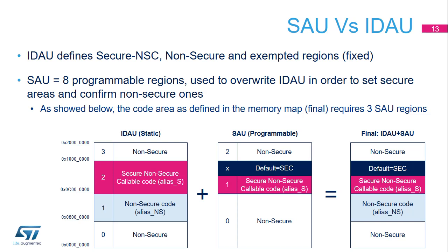For example, when an unmapped secure SAU region overlaps with a secure non-secure callable IDAU region, the resulting attribute is secure. So for a region to be non-secure, both IDAU and SAU attributes related to this region have to be non-secure.